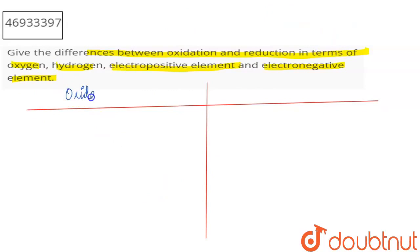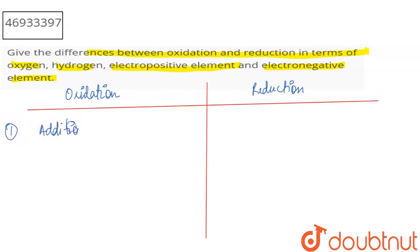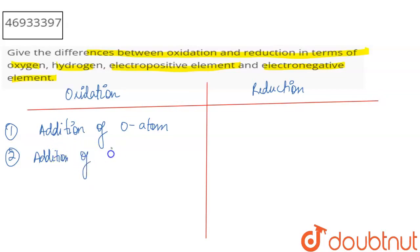First, we will talk about oxidation and reduction. If I talk about oxidation, it means addition of oxygen atoms. And you know that oxygen is an electronegative element, so you can say that addition of any electronegative atom is your oxidation.